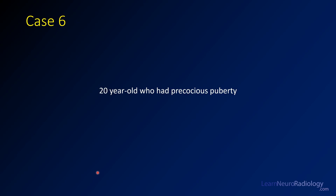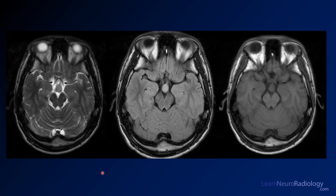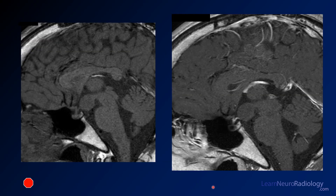Case 6 is a 20-year-old who had precocious puberty — obviously not at age 20, but they did as a young teenager. Here are some cross-sectional MR images through the level of the midbrain. You have a T2 on the left, a FLAIR in the middle, and this looks like a pre-contrast on the right. Here I've given you two more images: a pre-contrast and a post-contrast on the right.